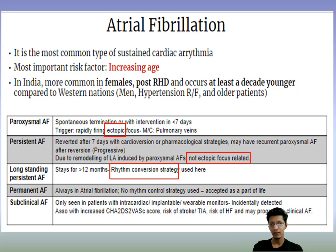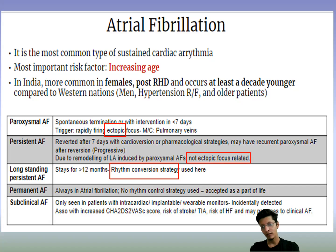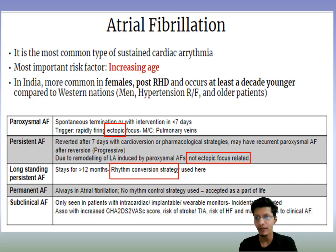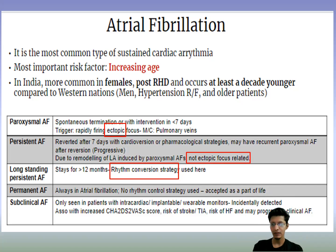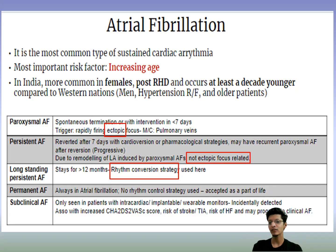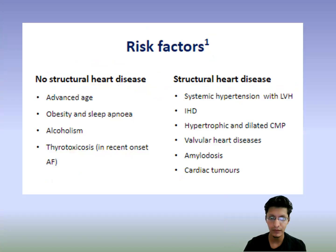Third is long-standing atrial fibrillation, which stays for more than 12 months — here rhythm control is important, you have to control the rhythm first. Fourth is permanent AF, where the patient will always stay in atrial fibrillation and there is no role of rhythm control strategy. Fifth is subclinical atrial fibrillation, seen only in patients with intracardiac implantable or wearable monitors. It is associated with high risk of stroke, TIA, heart failure, and usually carries a worse prognosis.